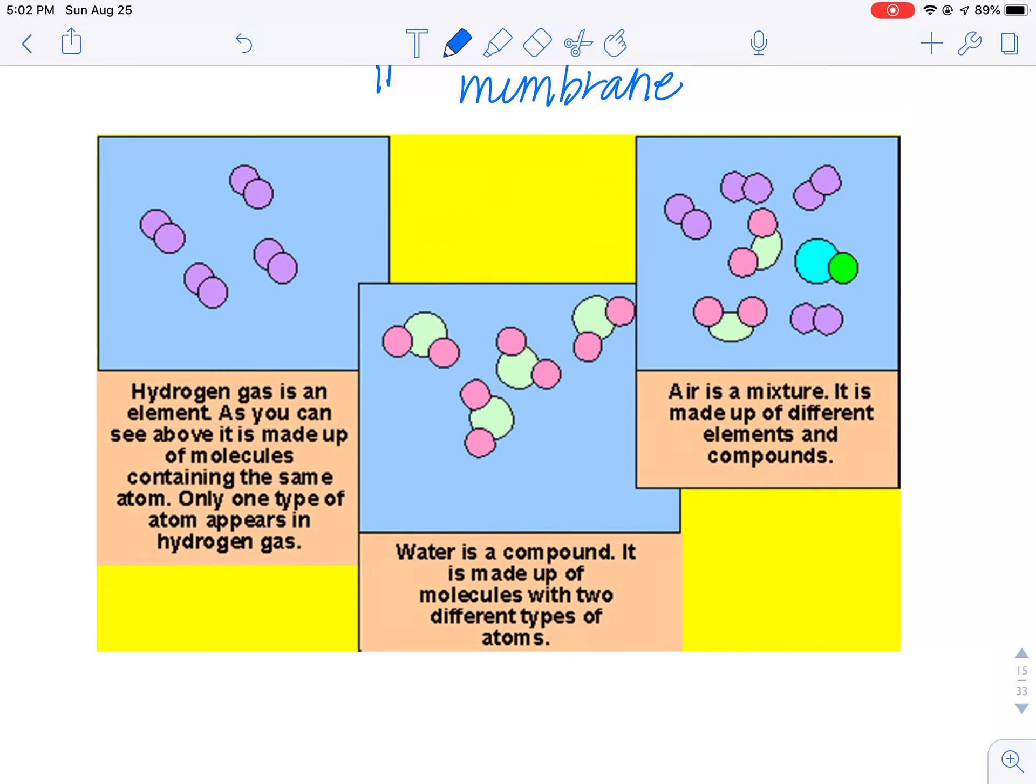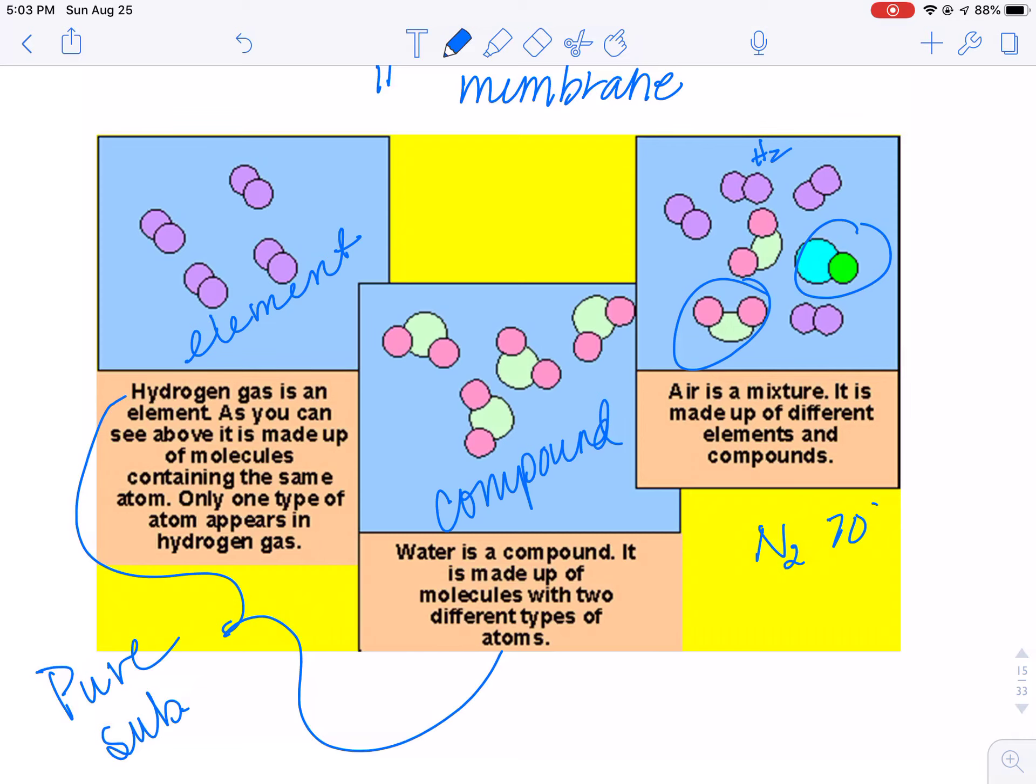Here are some examples of elements, compounds, and mixtures. Hydrogen gas is an element because they're all the same. Water is a compound. Both of these are pure substances. Air is a mixture. Here's the hydrogen that's pictured over there. Here's a water molecule. I have no idea what molecule that is, but it is a mixture of different elements and compounds. Actually air is like 70% nitrogen, 29% oxygen, and then trace amounts of everything else. CO2, water, argon, things like that.